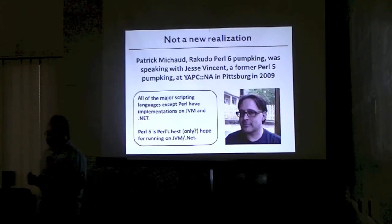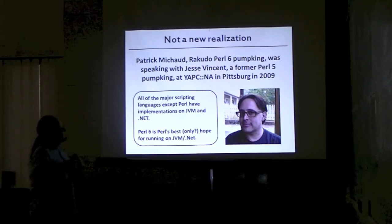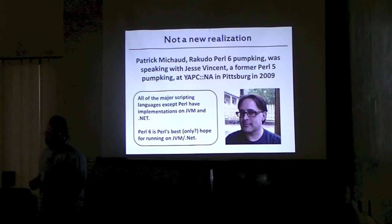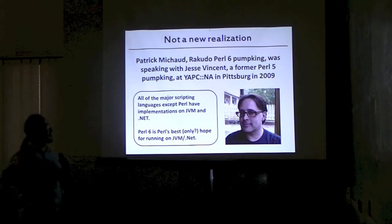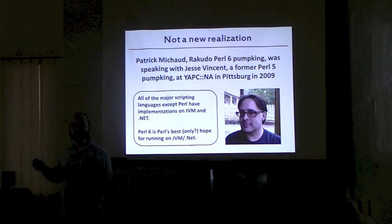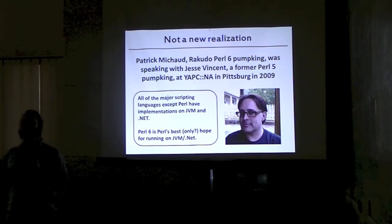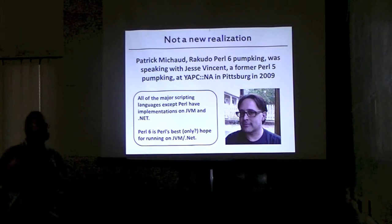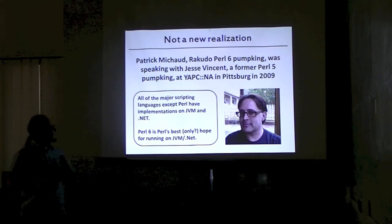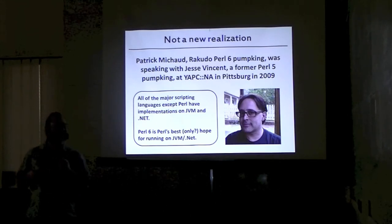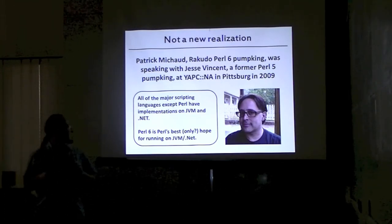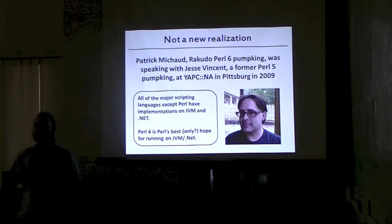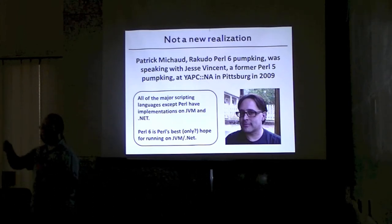Quite a while ago, Patrick Michaud — who is the Rakudo politics punk king — and Jesse Vincent, who has been in Perl 5, were sat on a bus together discussing stuff. The basic conclusion was: all the major scripting languages except Perl have implementations on the JVM and .NET. Perl 6 has probably the best, if not only, hope of actually getting onto the JVM and .NET and having a presence there. The only way we're going to get there is probably through Perl 6.